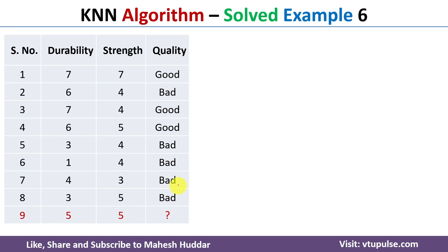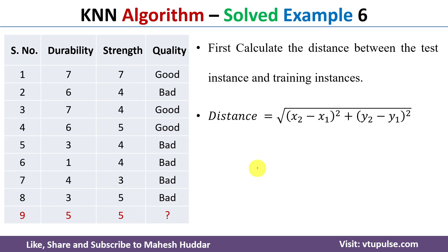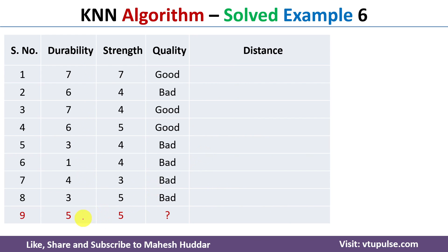First we will start with the basic KNN algorithm. We calculate the distance between the new example and each training example. The formula used is: distance = √((x2 - x1)² + (y2 - y1)²). The new example is (x1, y1) and the training examples are (x2, y2).